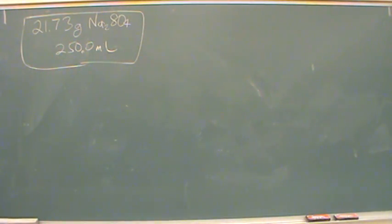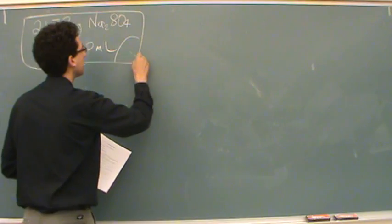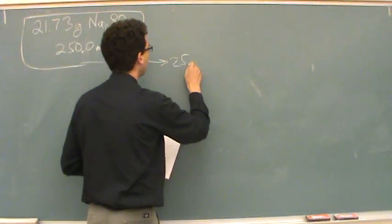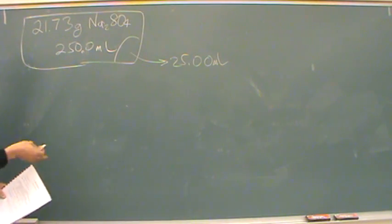Okay, so you've got so many grams of just the salt. And then what we do is we take a piece of this. We take 25 milliliters of that solution. It's going to have the same molarity. We're just taking a piece of it, so the concentration won't change.